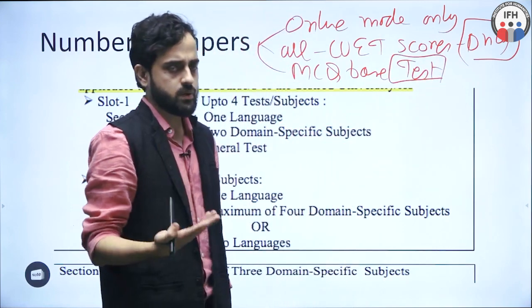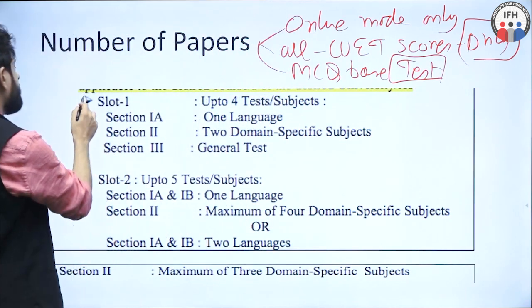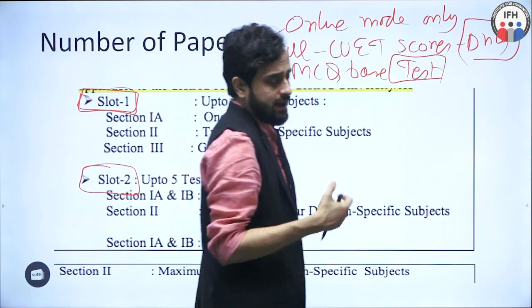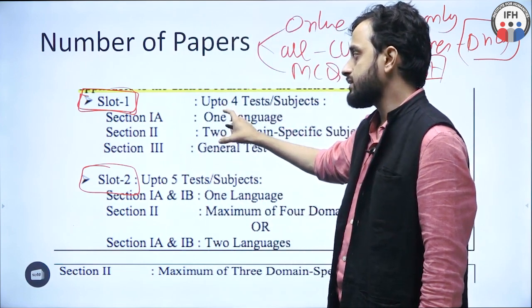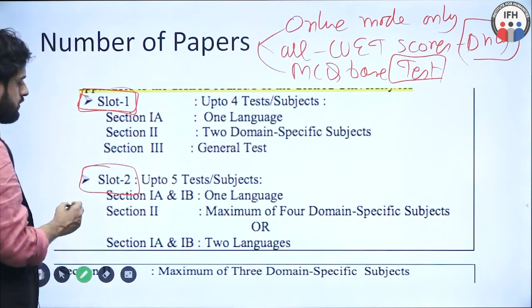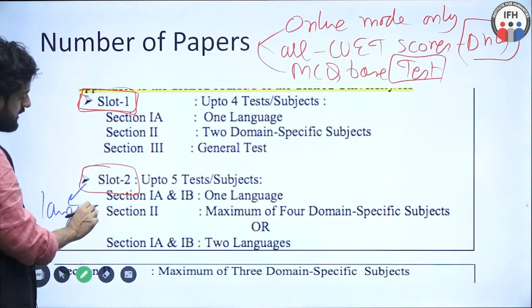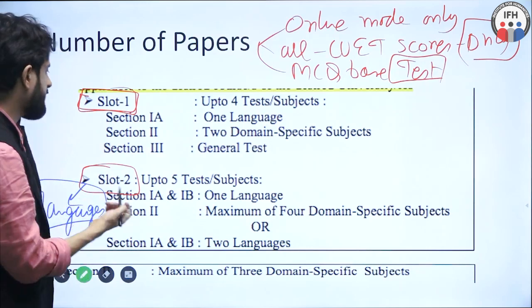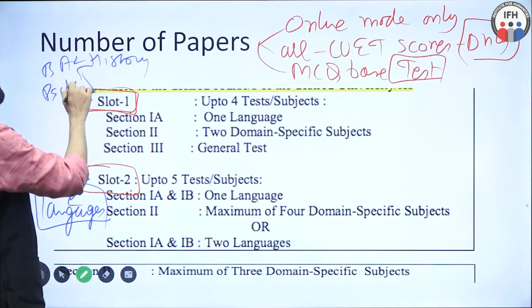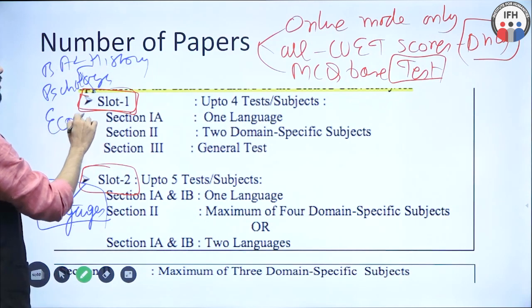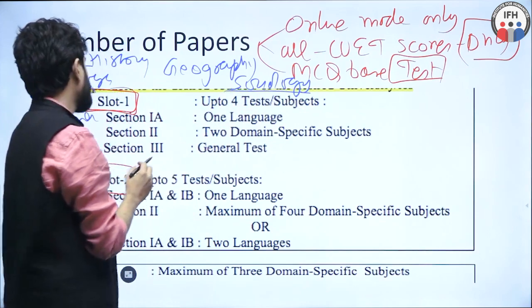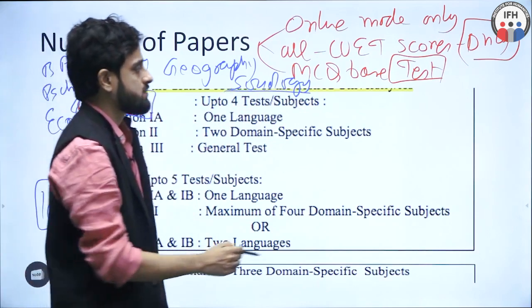The test can be given in two slots — either slot 1 or slot 2 — and students can choose whichever slot they want. In this video, I will talk in detail about slot 1. Slot 2 is for those wanting to study languages. But if you are looking to do a BA in history, psychology, political science, economics, geography, or sociology, it is much better that you choose slot 1.